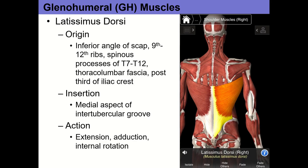The variation in lat insertion height is a fascinating trade-off: a higher insertion improves shoulder stability — useful since glenohumeral dislocations primarily occur with abduction and external rotation — but reduces turning force, so you're less effective at pull-ups. Elite throwing athletes like MLB pitchers likely have a lower lat insertion, giving them more external rotation and torque for throwing, at the cost of some shoulder stability.